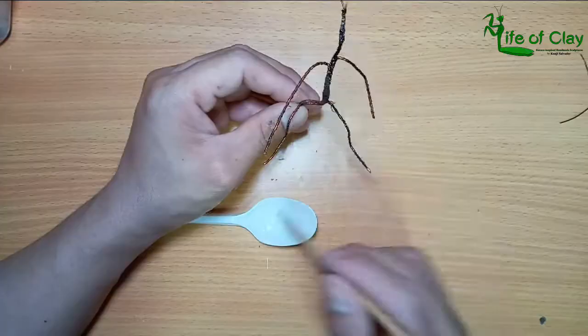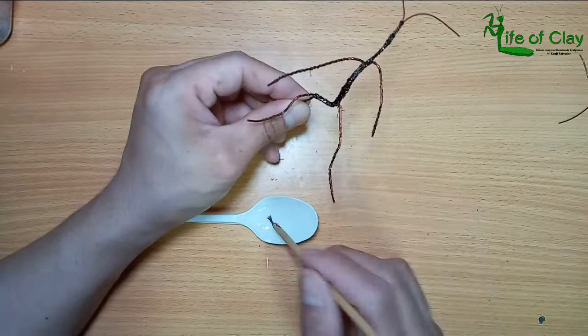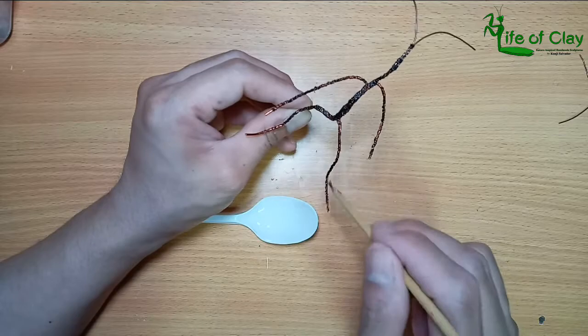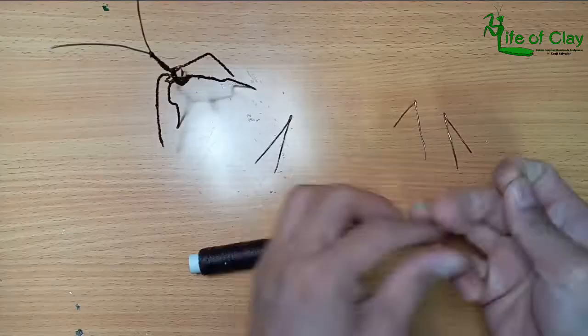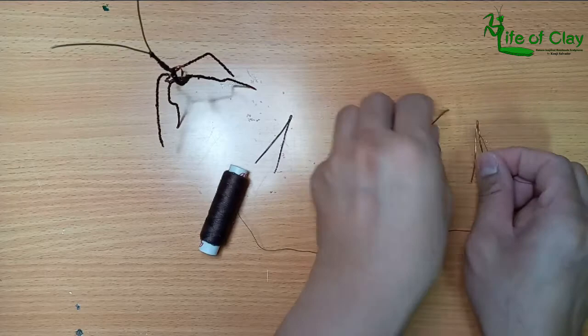Adding epoxy resin to bind them together and set aside overnight to cure. I then attach fingers on his hand using thin bronze wires. Same process is applied in binding them.